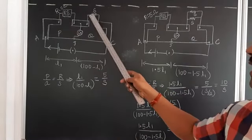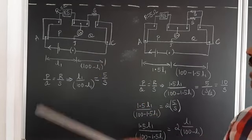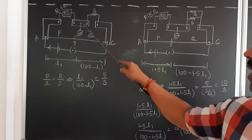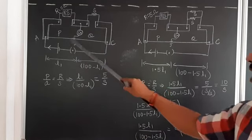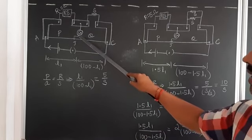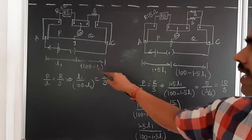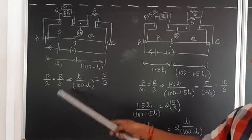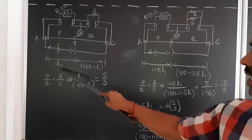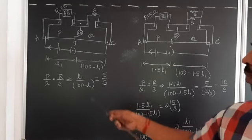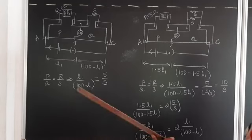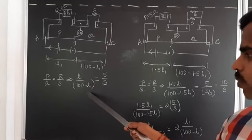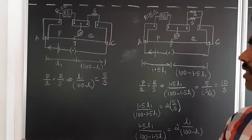Given: R = 5 ohm and S is unknown. With a battery and key connected in the meter bridge, at the null deflection point in the galvanometer we write P/Q = R/S. Here P = L1 (length from A to J) and Q = 100 − L1. So the first case equation is: L1 / (100 − L1) = 5/S.